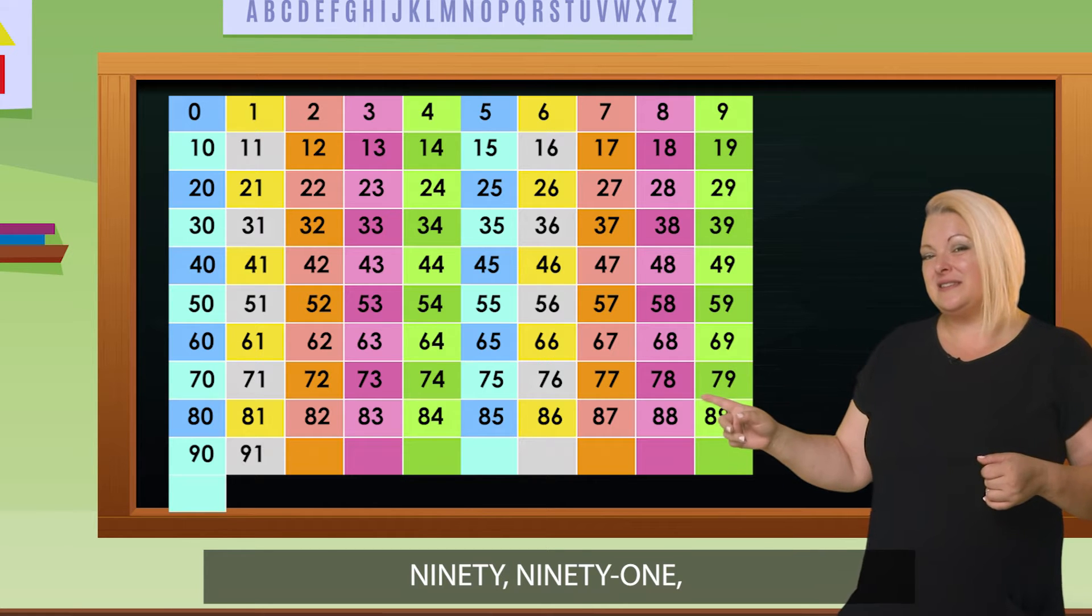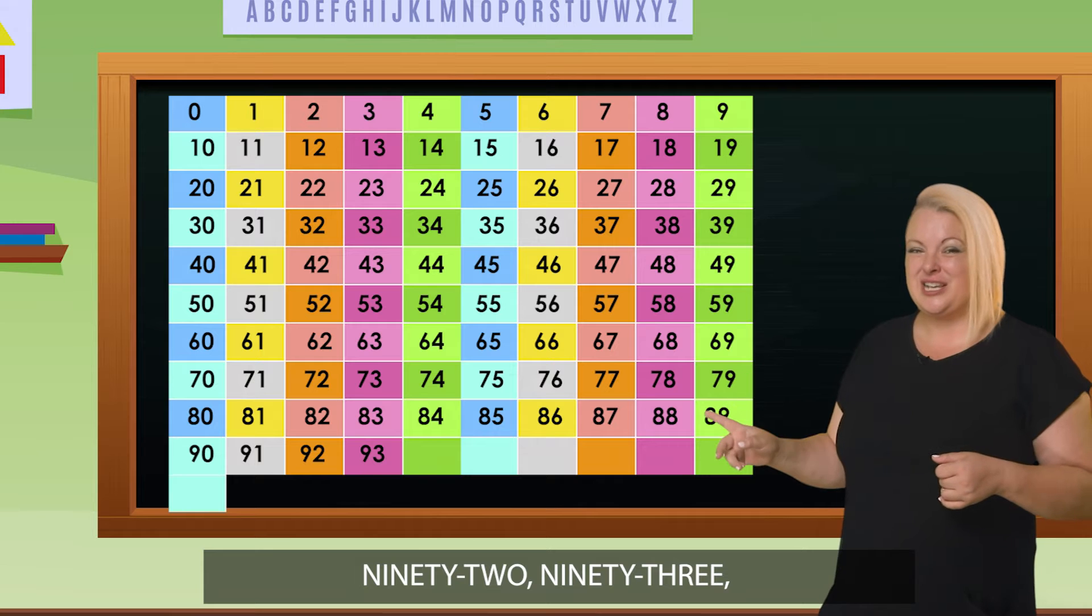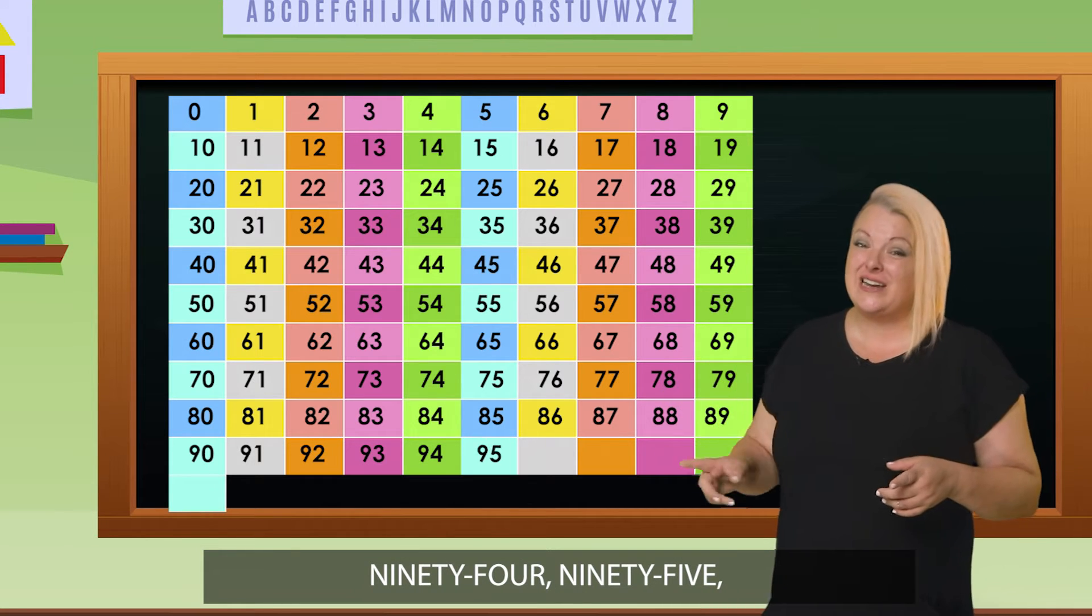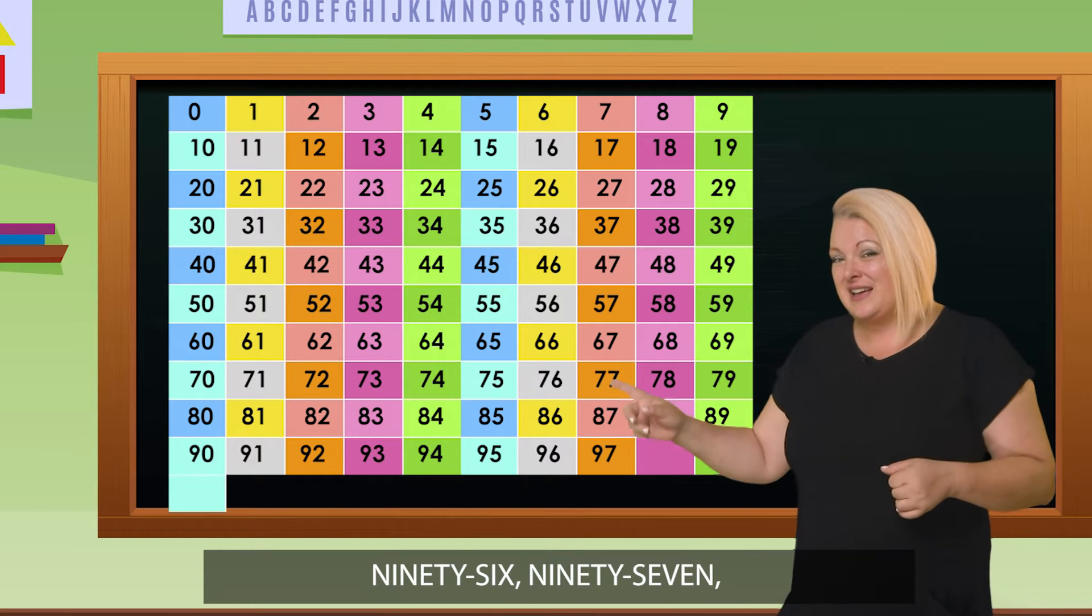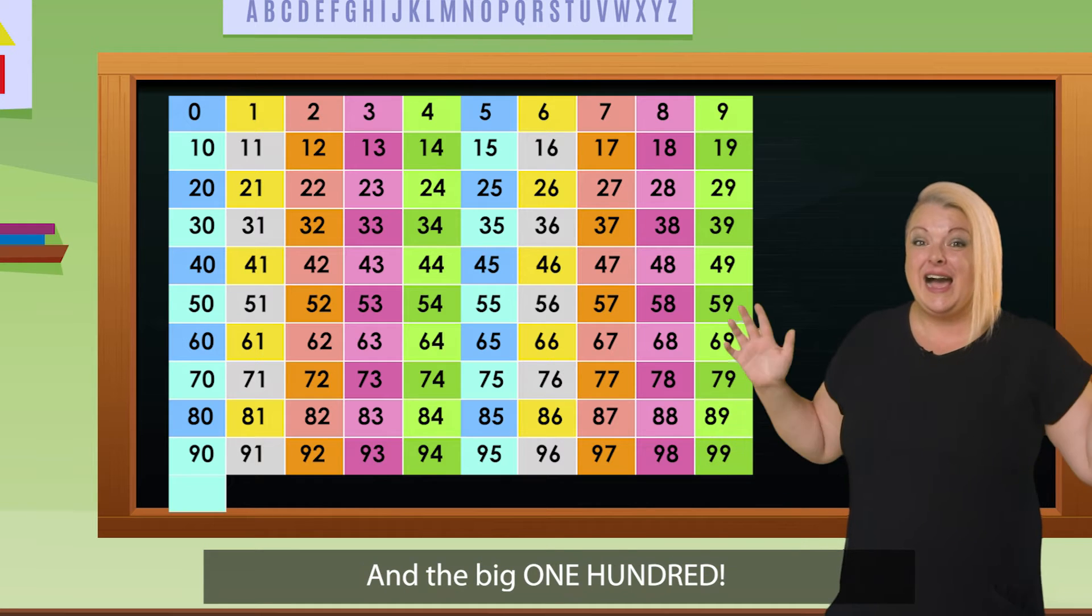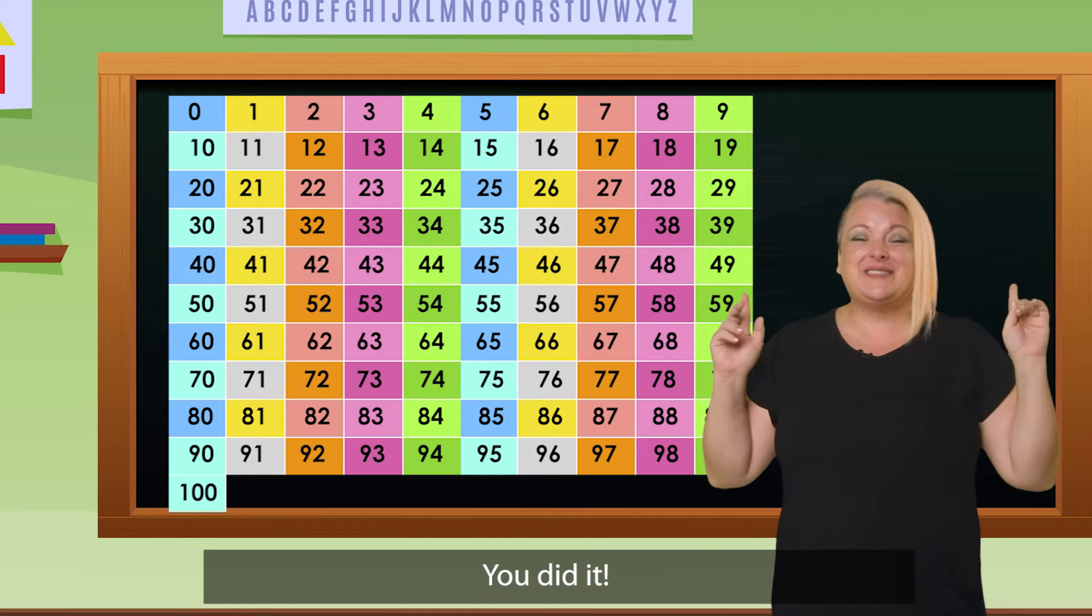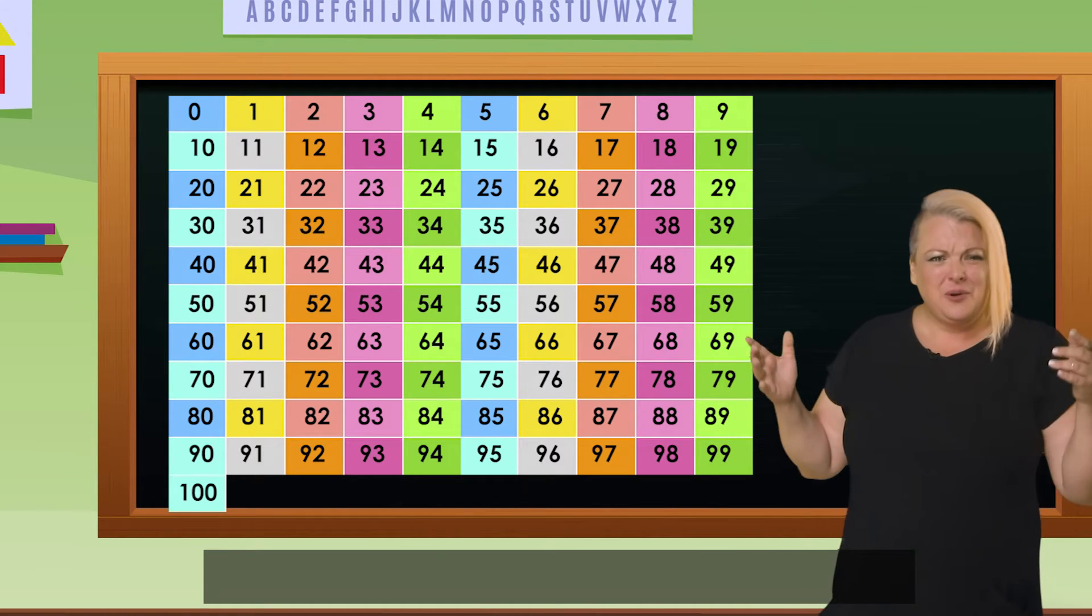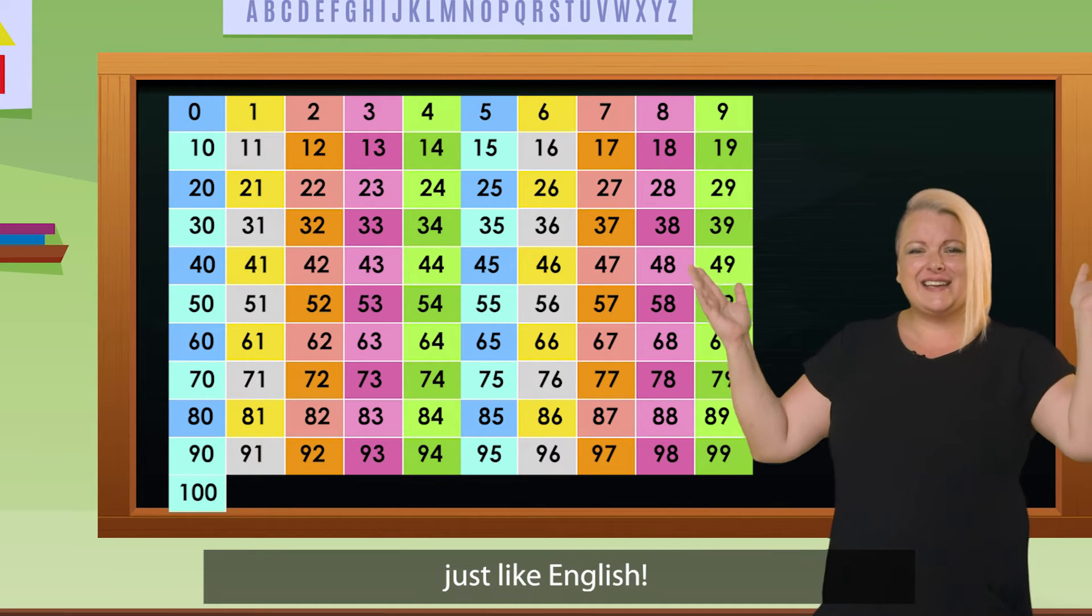91. 92. 93. 94. 95. 96. 97. 98. 99. And the big 100. You did it! You made it to 100. Was that difficult? It was easy peasy.